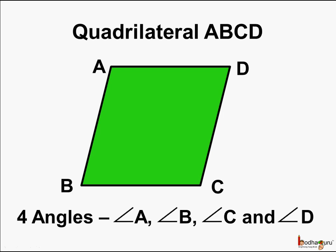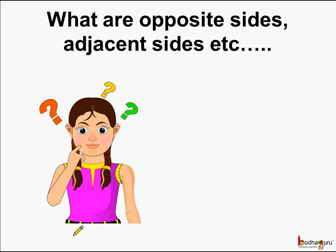Next, we also saw a quadrilateral has four angles: angle A, angle B, angle C and angle D. Now you must be hearing terms like opposite sides, adjacent sides, etc. What are these?